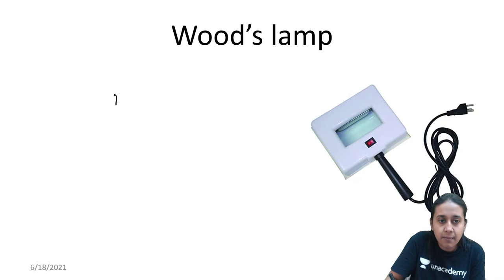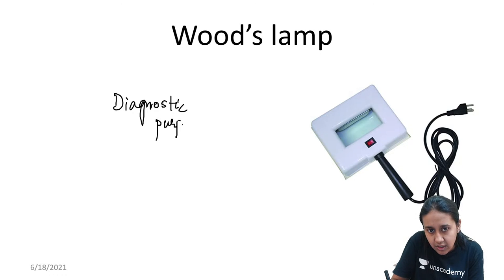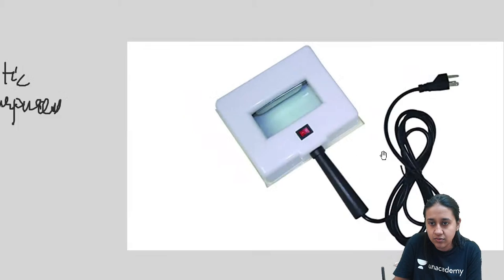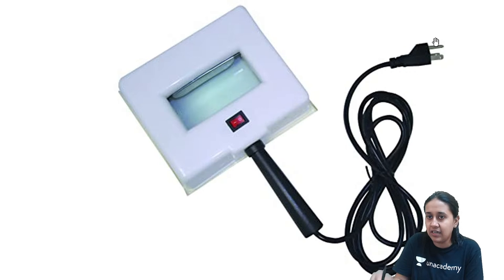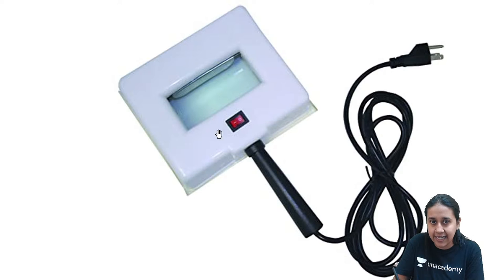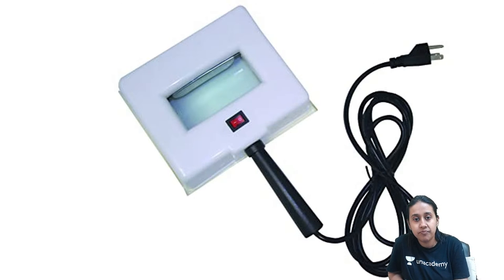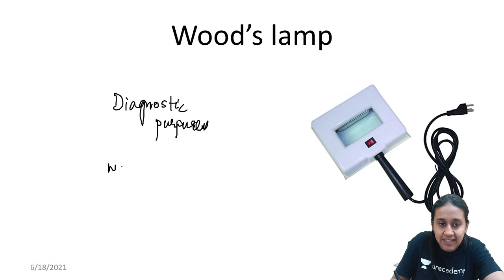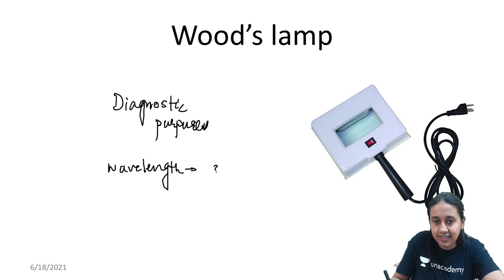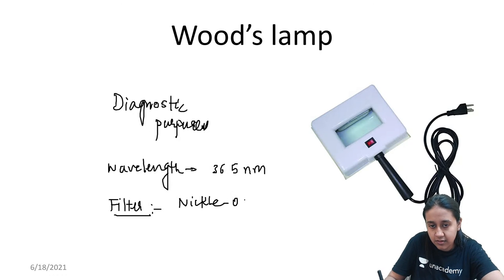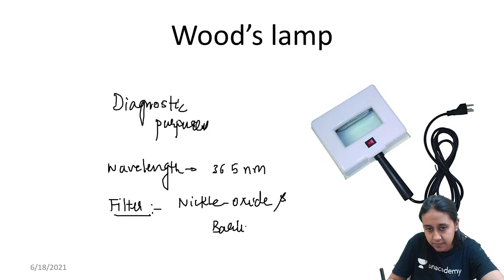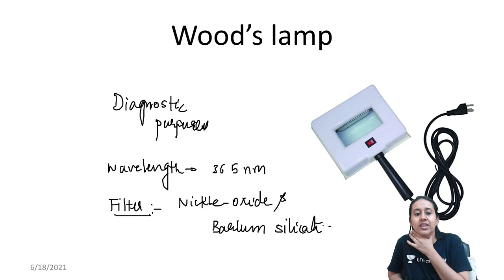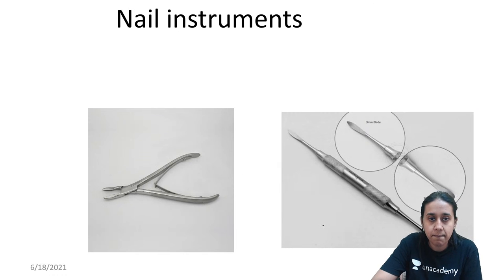The next instrument is the Wood's lamp, a bedside diagnostic instrument. It has a glass window over a rectangular box, with a bulb below that emits UV radiation. A filter made of nickel oxide and barium silicate allows only radiation of 365 nanometers to come out. So the wavelength emitted by the Wood's lamp is 365 nanometers, filtered through nickel oxide and barium silicate.